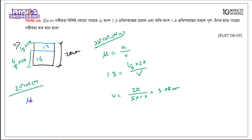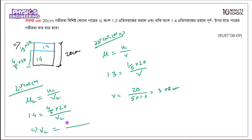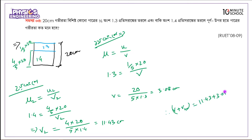For the second lens, mu2 equals u2 over v2. With mu2 equals 1.4, we get: four over five times twenty, and v2 equals (4 times 20) divided by (5 times 1.4). So v2 equals 11.43 centimeters. The total image distance is v1 plus v2 equals 11.43 plus 3.08, giving us 14.51 centimeters.